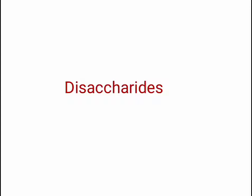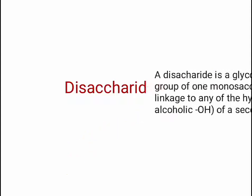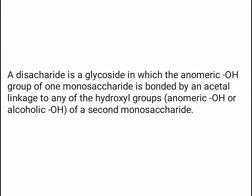In the previous videos we learned about monosaccharide chemistry. Now in this video we will learn about disaccharides, trisaccharides, and polysaccharides. A disaccharide is a glycoside in which the anomeric hydroxyl group of one monosaccharide is bonded by an acetal linkage to any of the hydroxyl groups — which may be an anomeric hydroxyl or any one of the alcoholic hydroxyl groups — of a second monosaccharide.